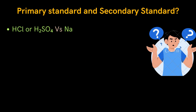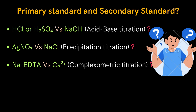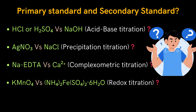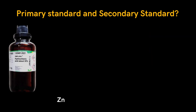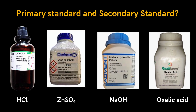Next, we need to understand primary and secondary standard substances, which are very important in volumetric titration. Can we directly start titration of hydrochloric or sulfuric acid with sodium hydroxide, which is acid-base titration? Can we do the titration of silver nitrate with sodium chloride, which is precipitation titration? Next is titration of sodium EDTA with calcium(II) ion, which is compleximetric titration, and titration between potassium permanganate with ferrous ammonium sulfate, which is redox titration. Among chemical substances such as hydrochloric acid, zinc sulfate, sodium hydroxide, and oxalic acid, can we decide which one is primary and which is secondary standard substance?